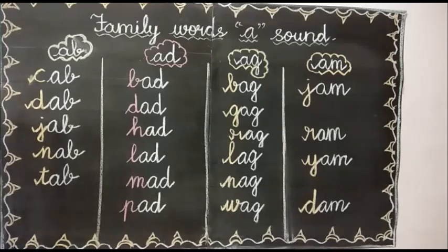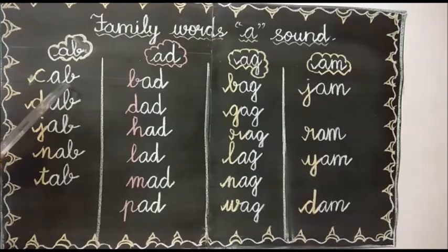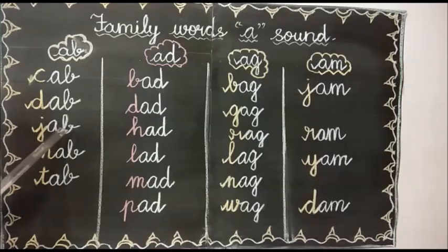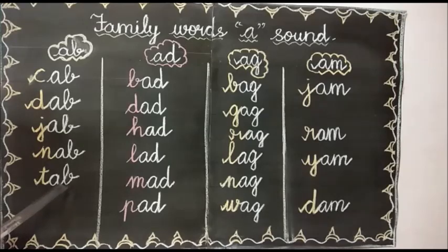First we are going to see the AB family. First one: cab. C-ab, cab. Next one: dab. D-ab, dab. Next one: jab. J-ab, jab. Next one: nab. N-ab, nab. Next one: tab. T-ab, tab.